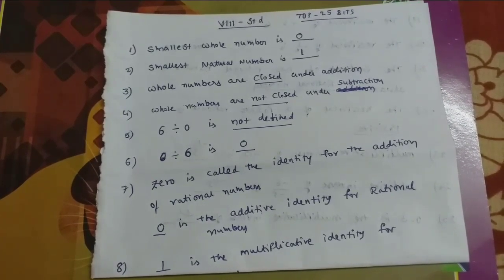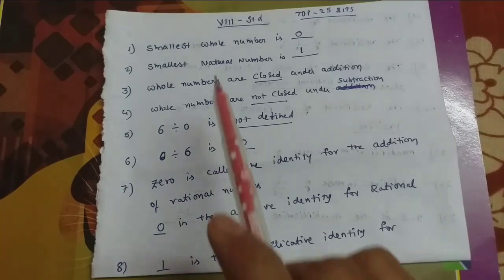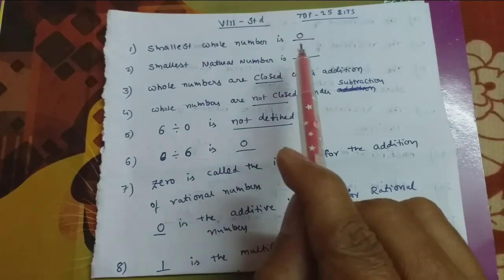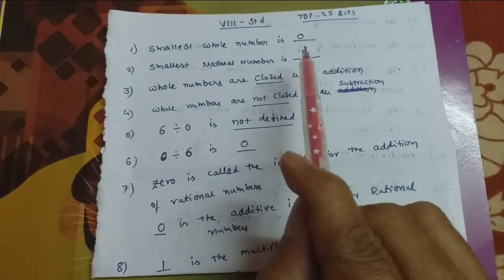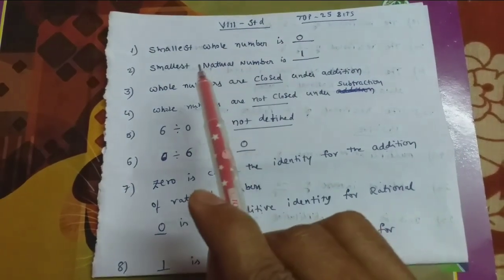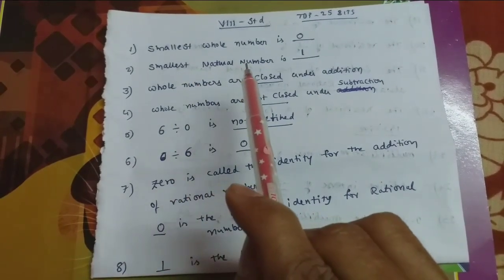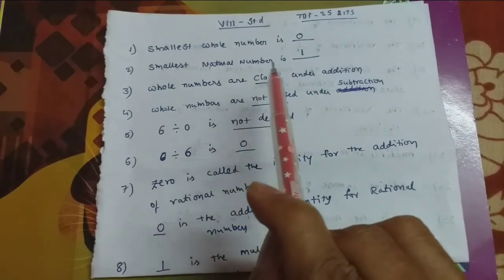The smallest whole number is 0. And the smallest natural number is 1.